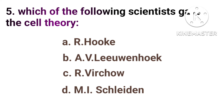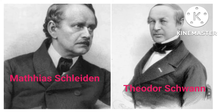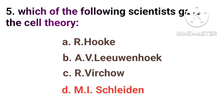Which of the following scientists gave the cell theory? Option A, R. Hooke. Option B, A. V. Leeuwenhoek. Option C, R. Virchow. Option D, M. J. Schleiden. Matthias Schleiden and Theodor Swann gave the cell theory. Matthias Schleiden, a German botanist, discovered that all plants were made of cells in 1838. In 1839, Theodor Swann, a British zoologist, discovered that all animals are made of cells. So the correct answer is Option D, M. J. Schleiden.